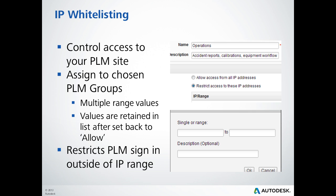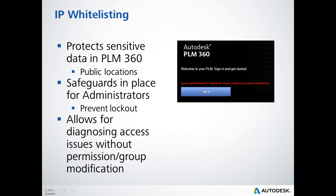Users in the group signing in from an address not on the list are denied access, even though they are members of the group. PLM 360 also allows for multiple range values to be set per group, and these values are maintained even if the group access is set back to the Allow All setting. This feature is useful to protect sensitive data and restrict access from public locations such as airports, cafes, or other public Wi-Fi hotspots.